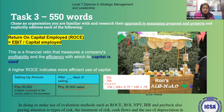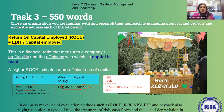A ROCE of 75% means our profitability and efficiency in terms of capital employed is very good, so the halo-halo business is something viable. That's how you use Return on Capital Employed to evaluate a business.